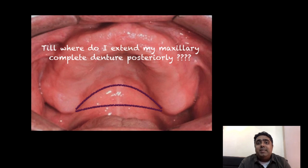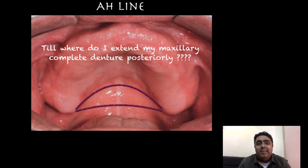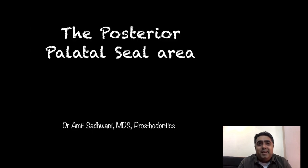Hence we need to place it wisely with some knowledge. This particular line is also called the posterior vibrating line, or the AH line. In reality, an area rather than a line needs to be recorded and replicated into the denture base, and hence the topic of my presentation today is the posterior palatal seal area, or the PPS as we commonly call it.